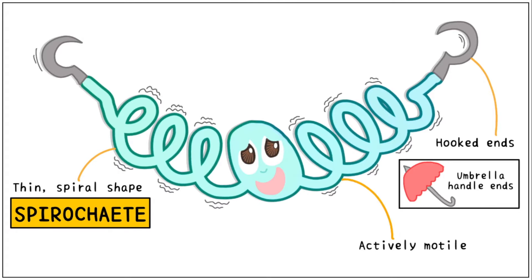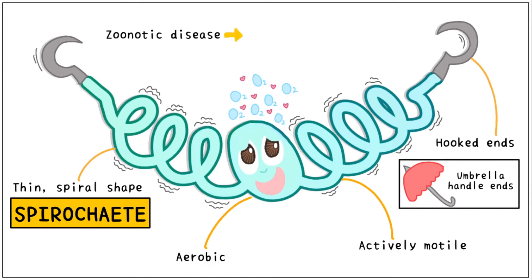Leptospira is very active and motile. It causes a zoonotic disease — meaning an infection transmitted from an animal to a human — called Leptospirosis.